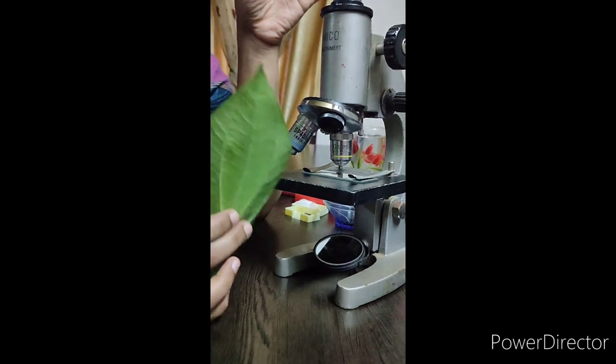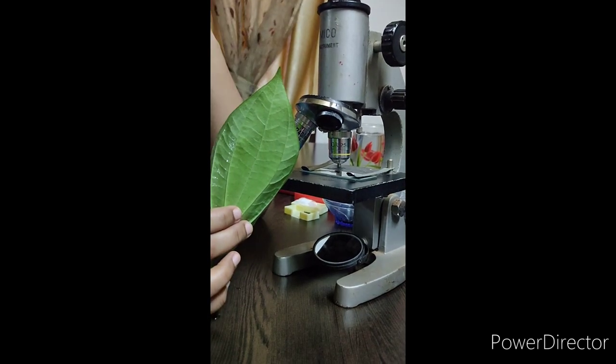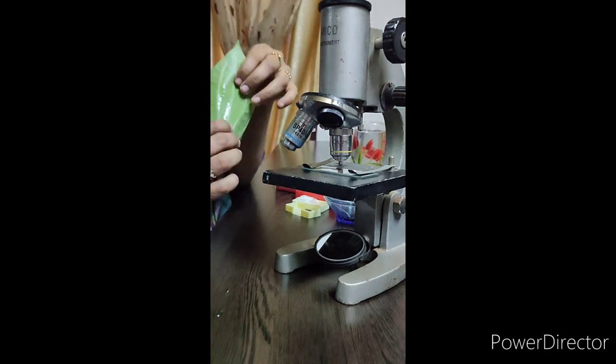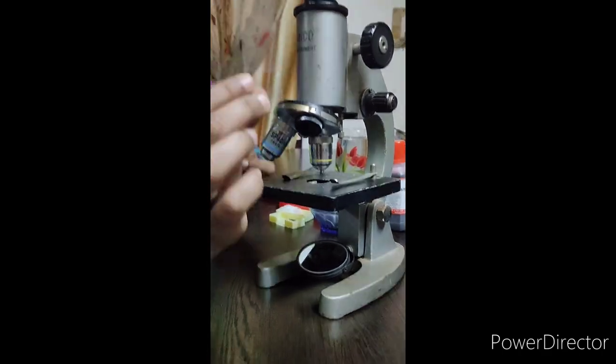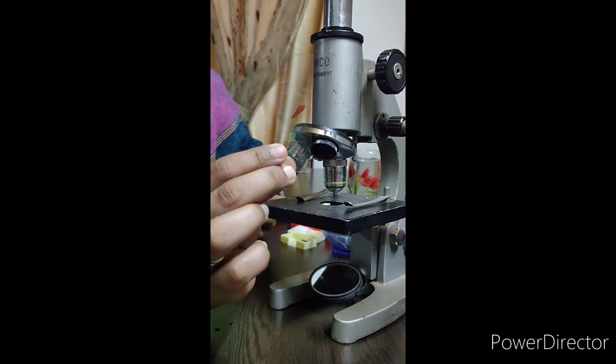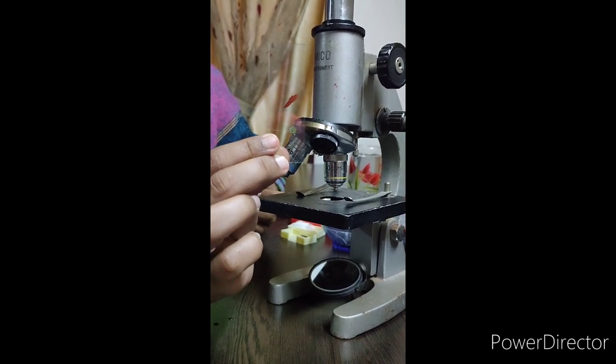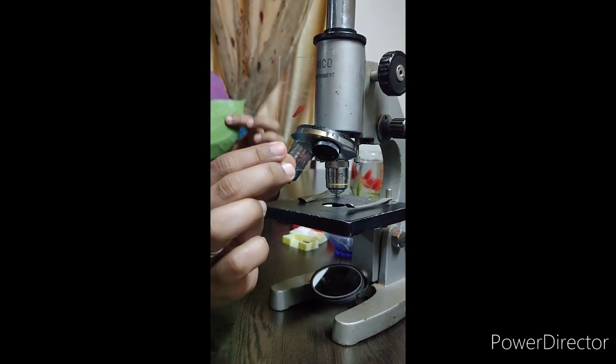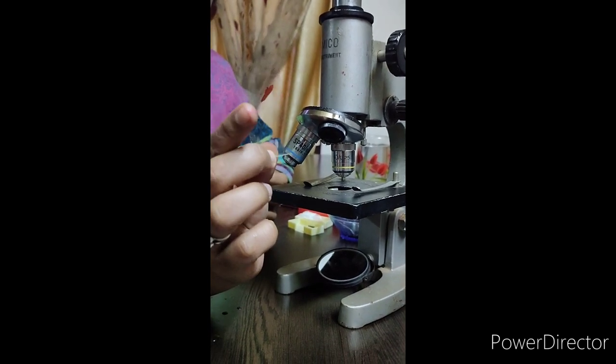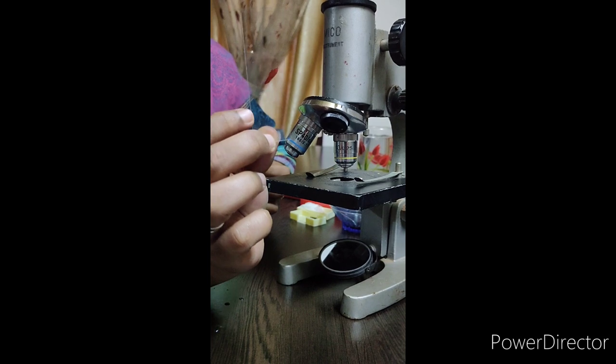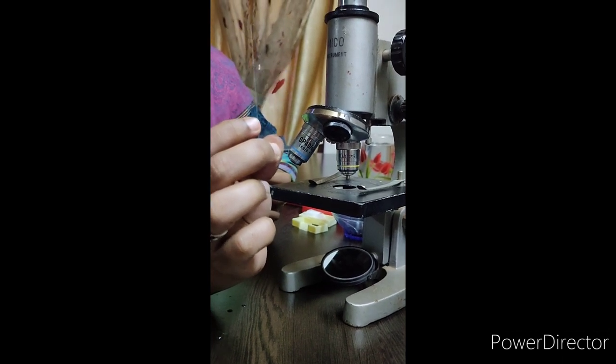To view a stomata, we have to prepare a slide. I have already prepared a slide here. This is the slide which contains the epidermis of a leaf. I have used the betel leaf's epidermis. And through this slide, you can see the stomatas that are present here on this epidermis.